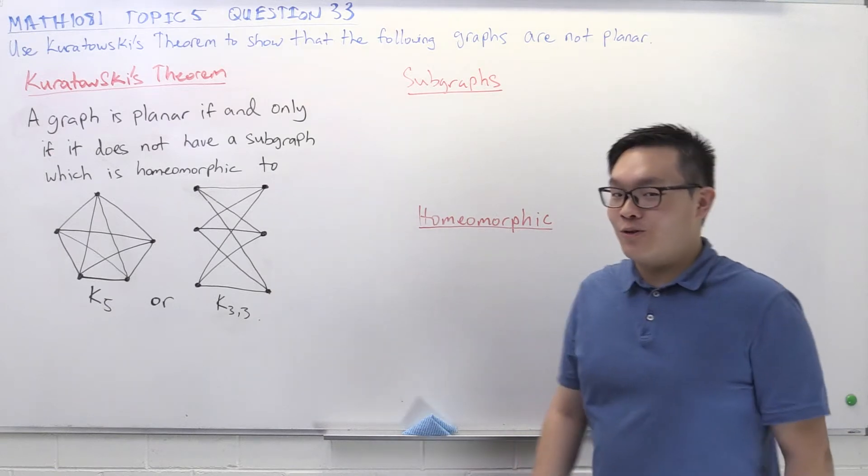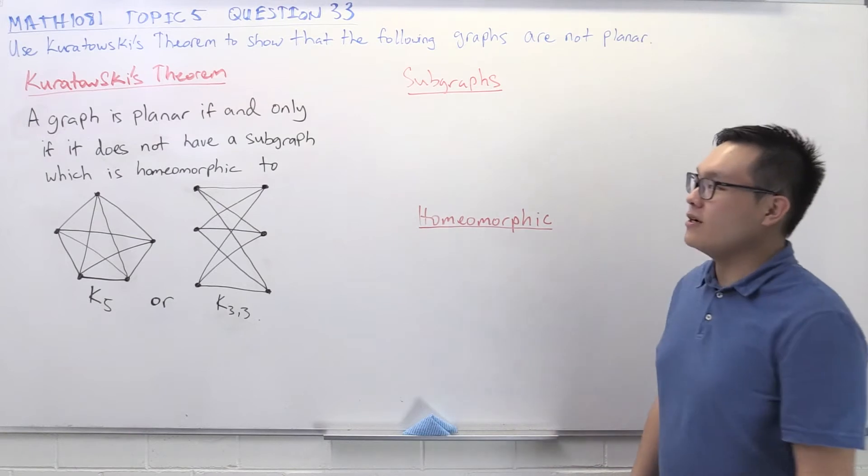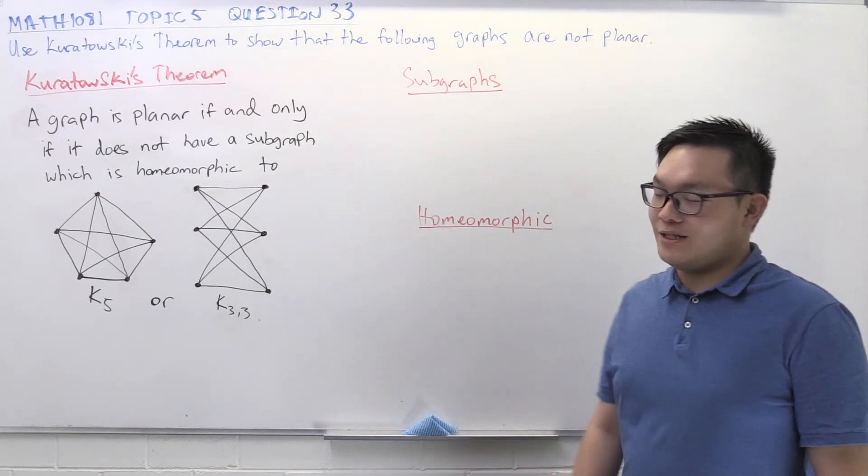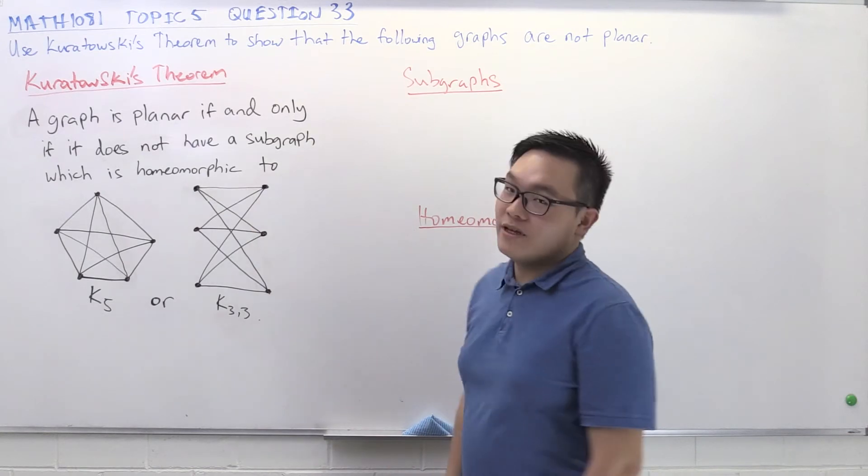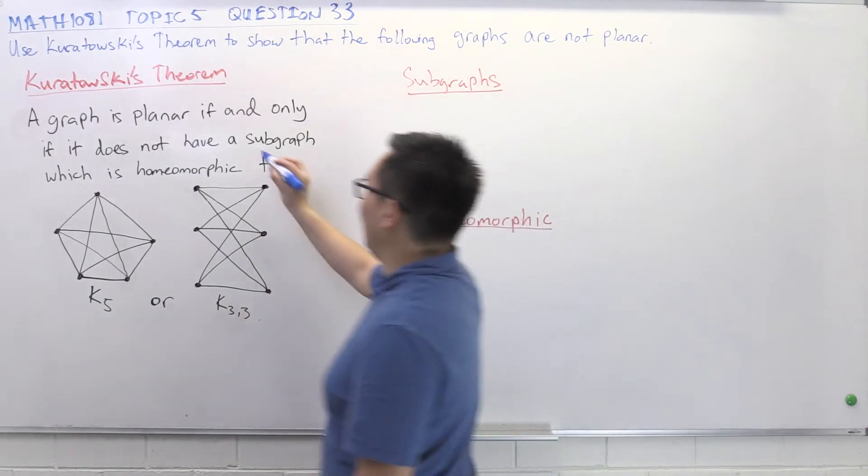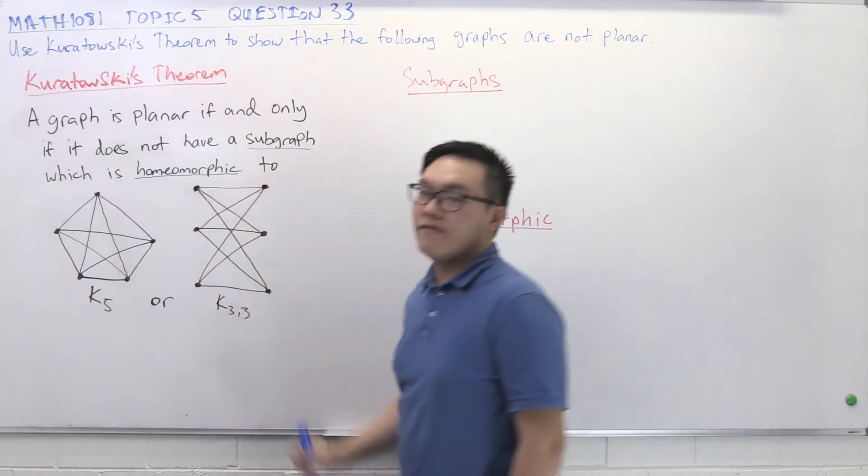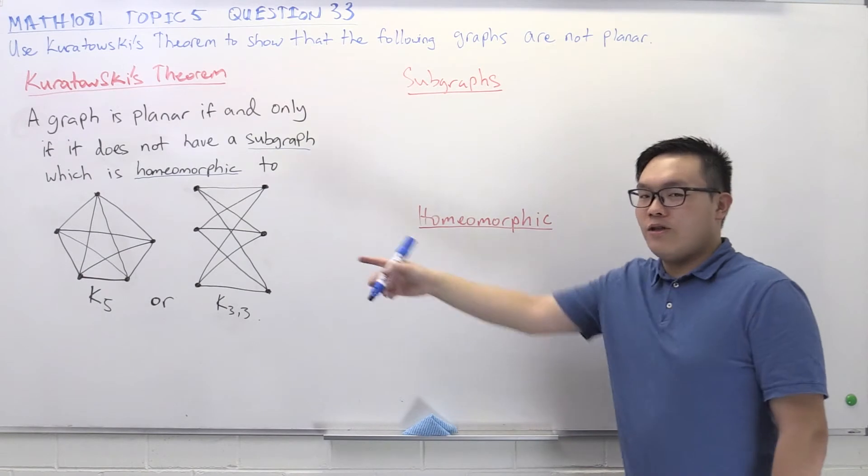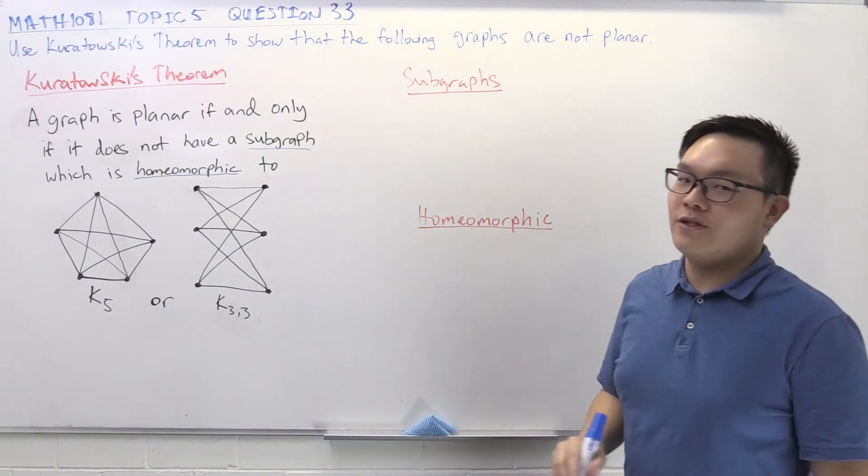Question 33 is asking us to use Kuratowski's theorem to show that a number of graphs are not planar. So let's revise what Kuratowski's theorem tells us. It tells us that the graph is planar if and only if it does not have a subgraph which is homeomorphic to one of these two, K5 or K33.